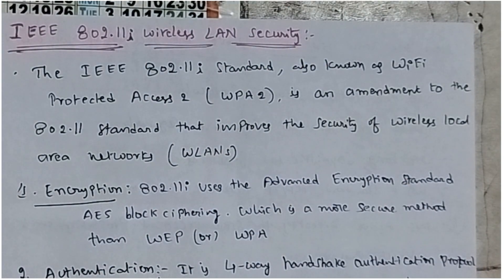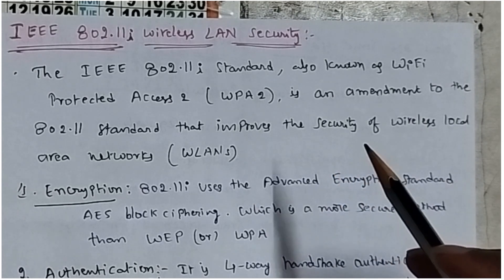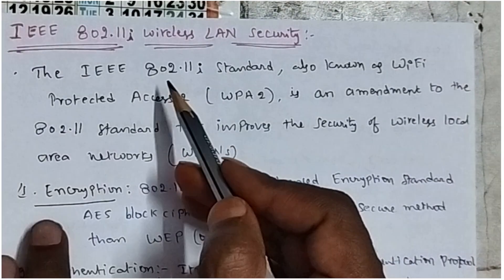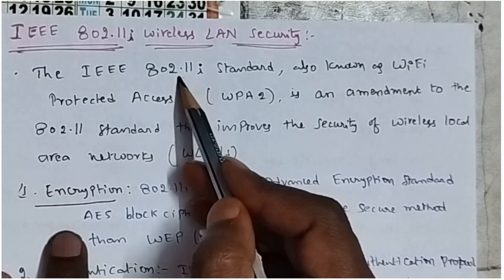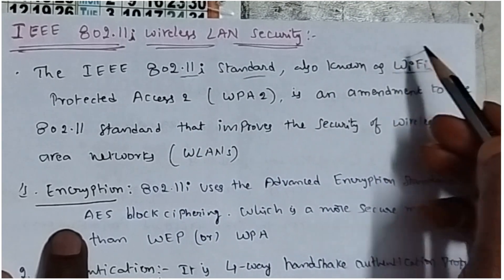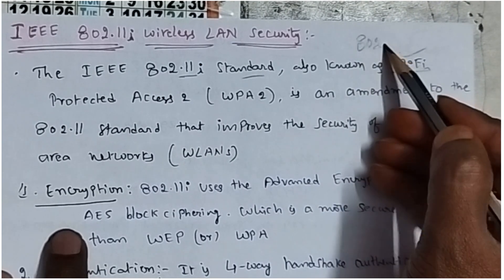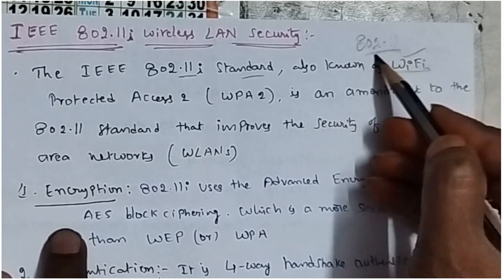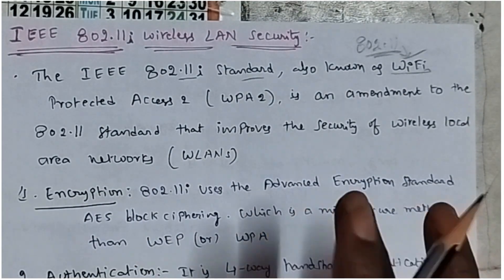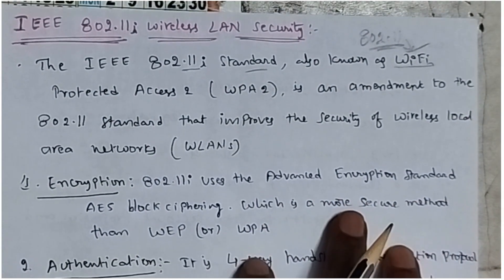In the last class, we discussed about IEEE 802.11 wireless LAN. Here, 802.11i is about wireless LAN security. The meaning of the IEEE 802.11 standard is nothing but it is also known as Wi-Fi — a group of wireless LANs.